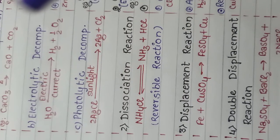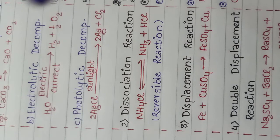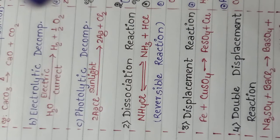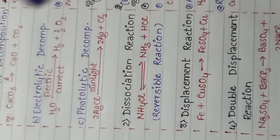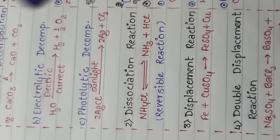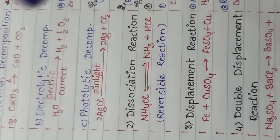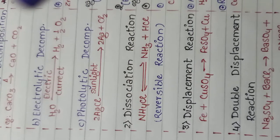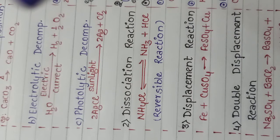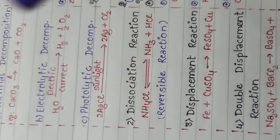Next one is displacement reaction. When any element or group of atoms displaces another element from its aqueous solution, it is called displacement reaction. Displacement reaction is based on activity series. In this type of reaction, a highly active element always displaces the lower active element from its place. For example, iron displaces copper from its salt because iron is more active than copper.